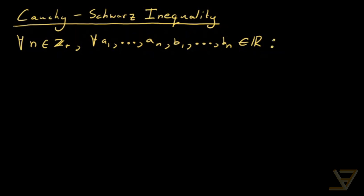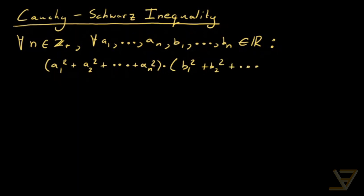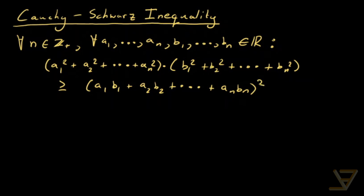It holds that a1 squared plus a2 squared all the way through to an squared, times b1 squared plus b2 squared all the way through to bn squared, is greater than or equal to a1b1 plus a2b2 all the way through to anbn, and then the whole thing is squared.